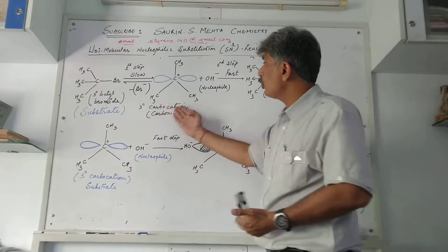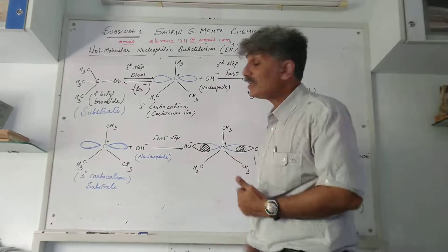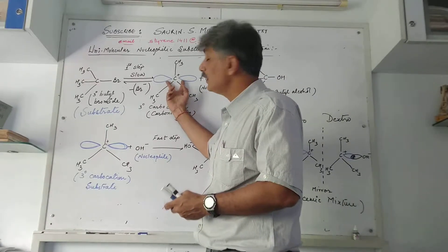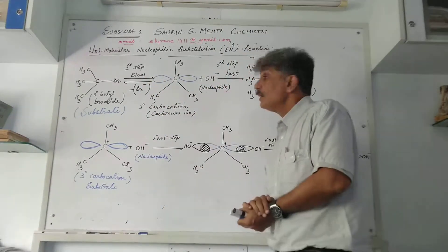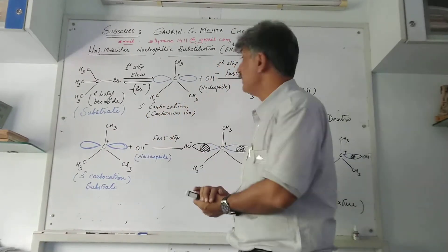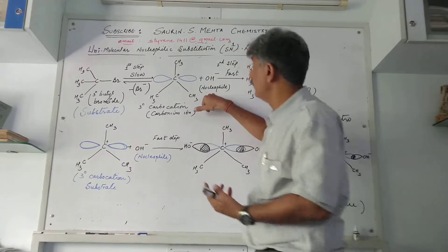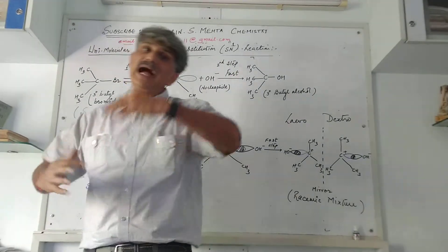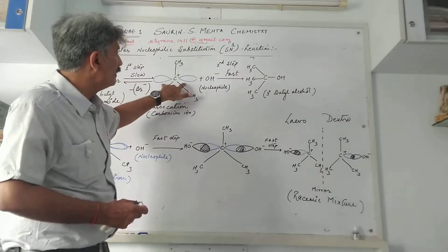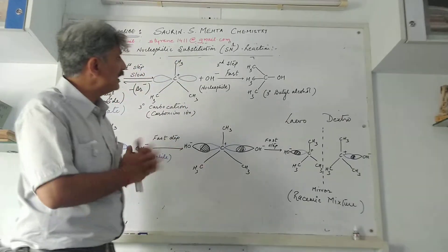When a tertiary carbocation is formed, there are two probabilities. I have shown the electron density for the incoming nucleophile. The hydroxide nucleophile can attack either from the front side or from the rear side. I have shown both probabilities here.